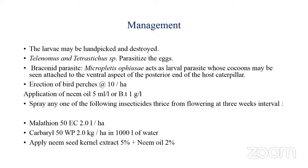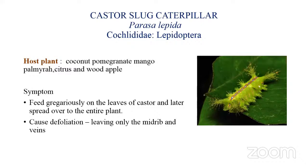If pest attack is more, spray insecticides like malathion or carbaryl. You can also use neem seed kernel extract plus neem oil as botanical extracts. The next pest is the castor slug caterpillar, which is very common in the southern region of the country, such as Chennai.